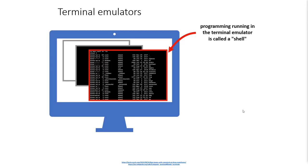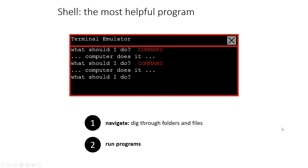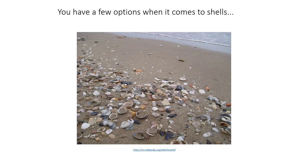When we run a terminal emulator on our computer — for example, PowerShell on Windows, or Terminal on a Mac or Linux — that is a program that's going to run another program called a shell. A shell is very simple; it really only does two things. It lets me move through the folders or directories on my system and look at all the files, and it lets me run programs. It just asks what should I do, I type a command, then it asks what should I do now, and I type another command.